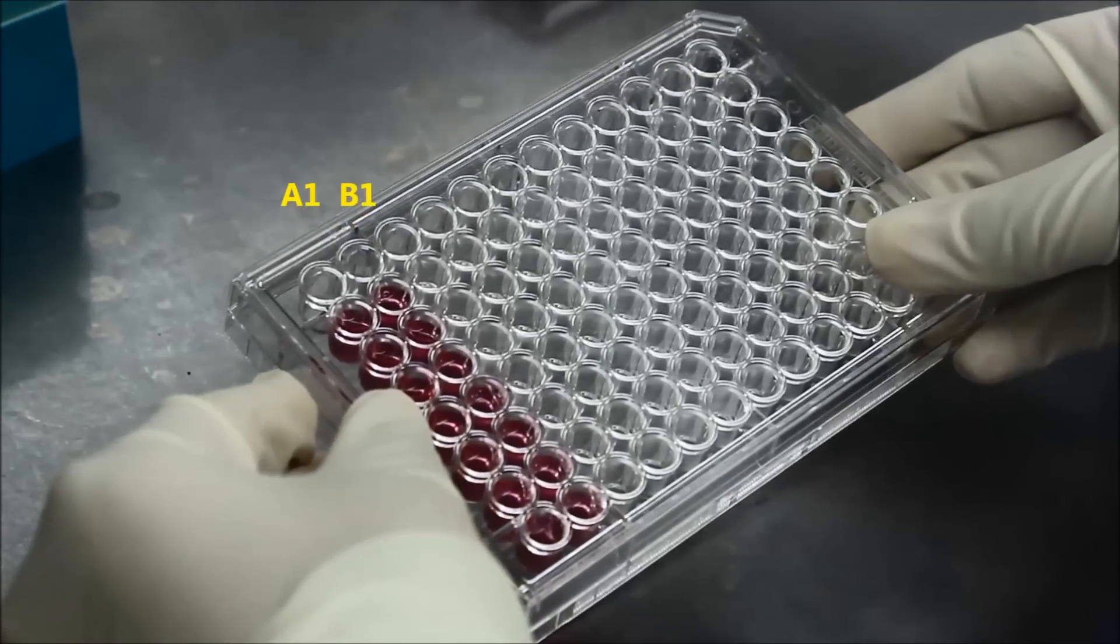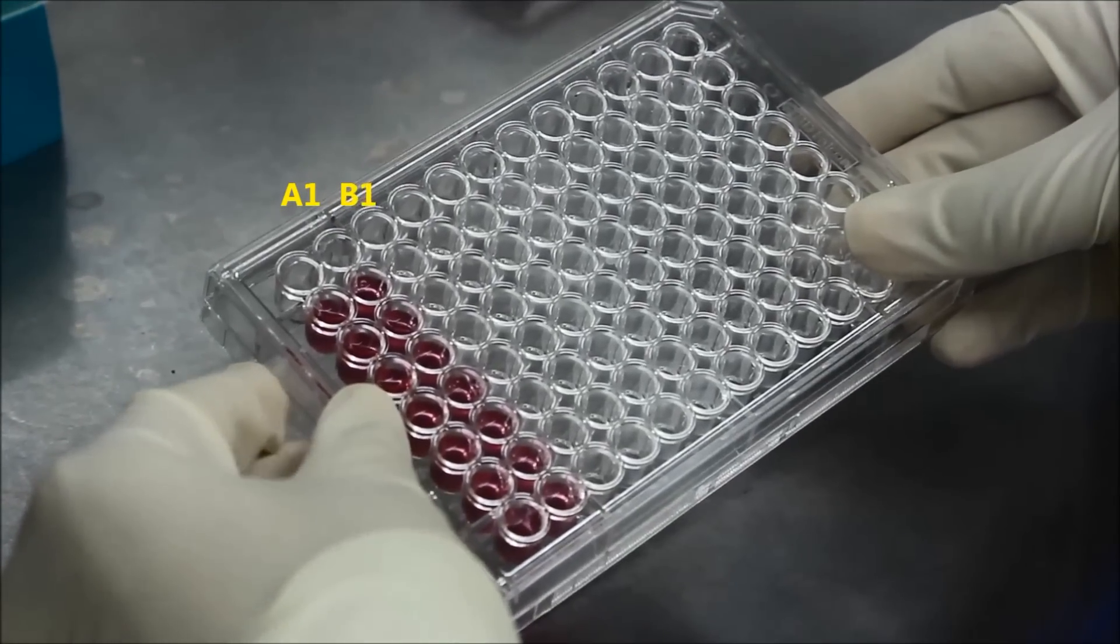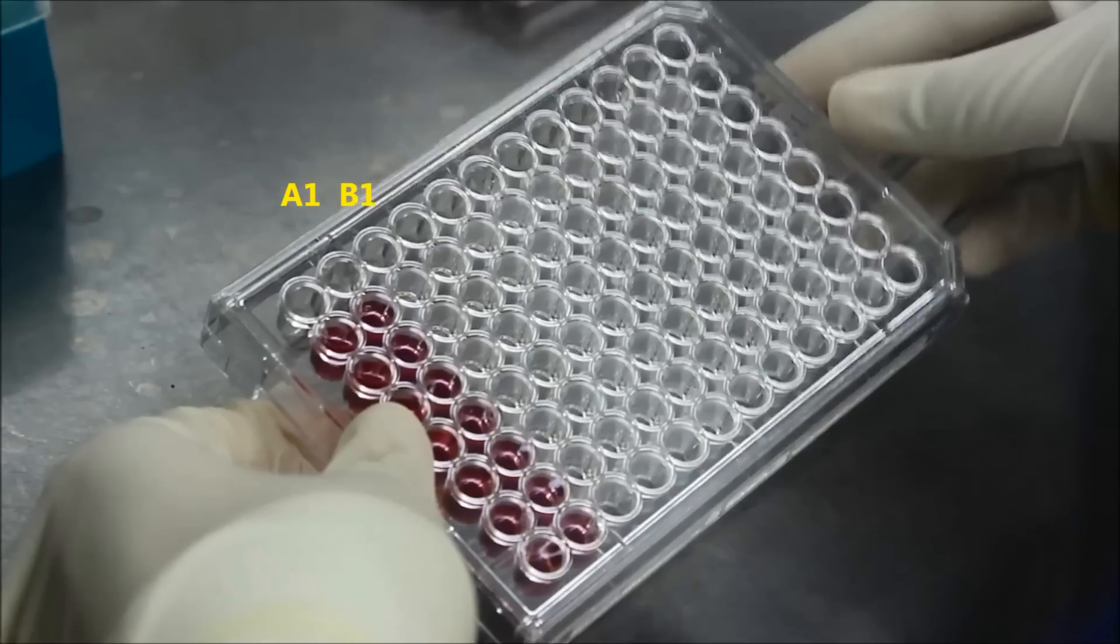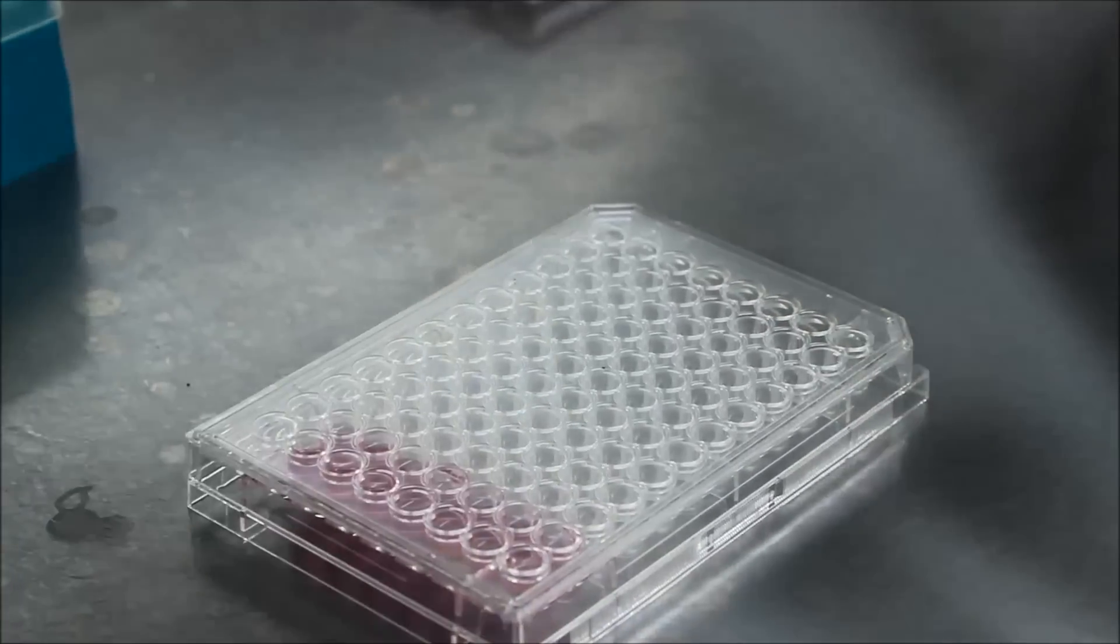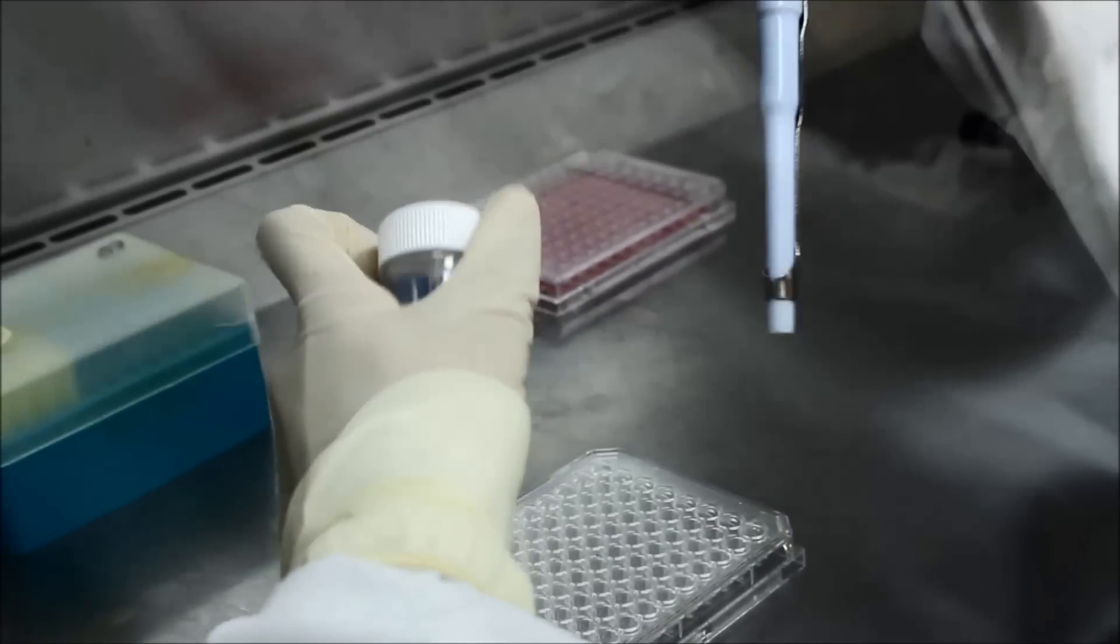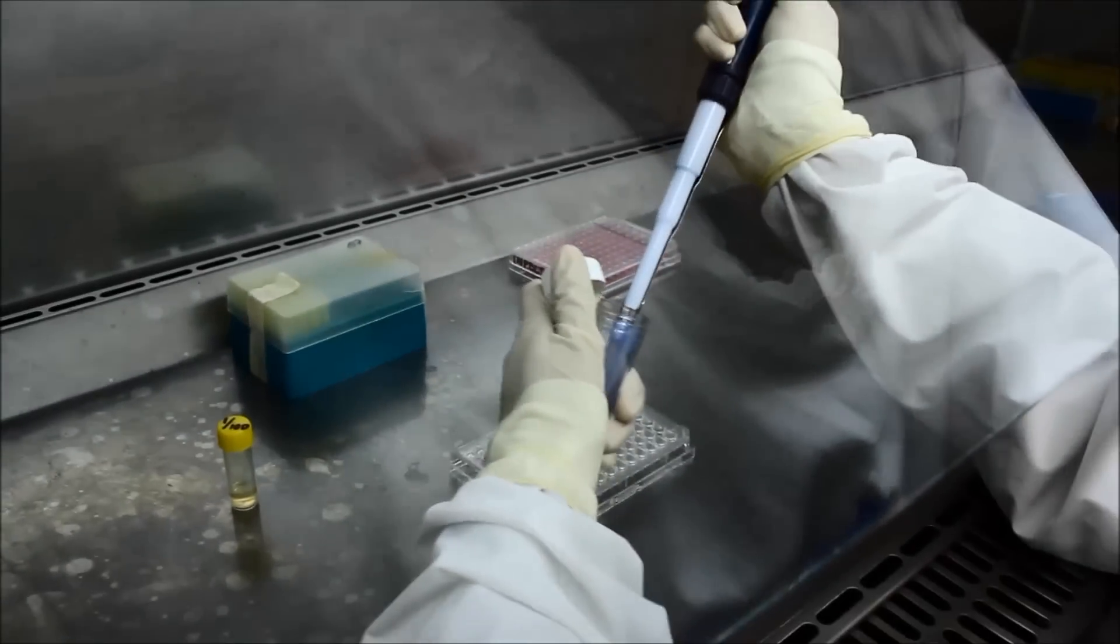After adding 270 µL of growth media to the first two columns, except for wells A1 and B1, add 300 µL of your diluted virus stock to these two empty wells.